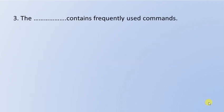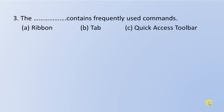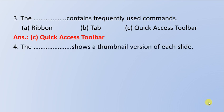Next question: Which area contains frequently used commands? Option A: Ribbon, Option B: Tab, Option C: Quick Access Toolbar. The right answer is Option C: Quick Access Toolbar, as the name suggests.